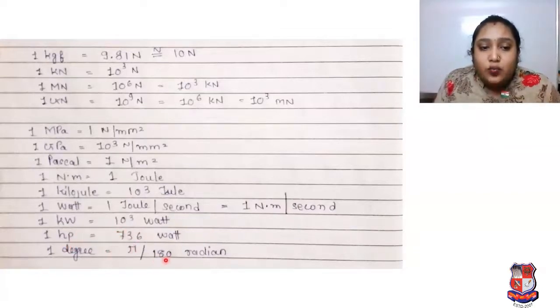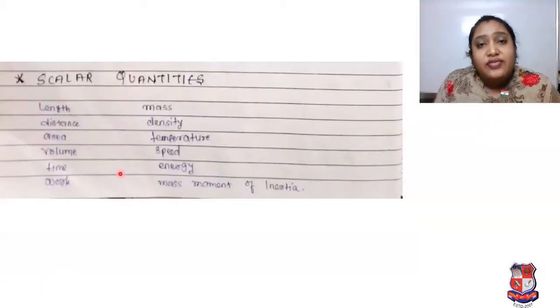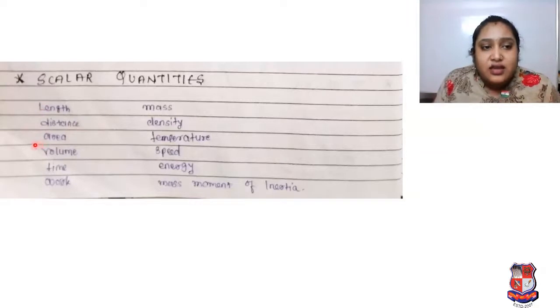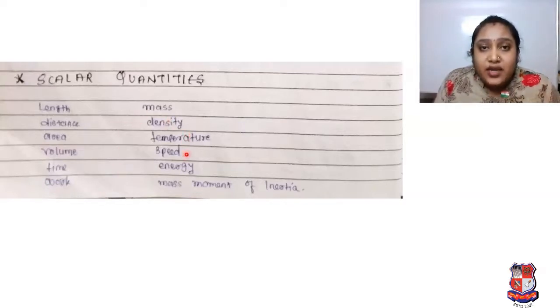If we talk about scalar quantities, these include: length, distance, area, volume, time, work, mass, density, temperature, speed, energy, and mass moment of inertia. Vector quantities include: displacement, velocity, acceleration, momentum, moment, force, weight, angular displacement, angular velocity, angular acceleration, and impulse, because these quantities have both magnitude and direction.